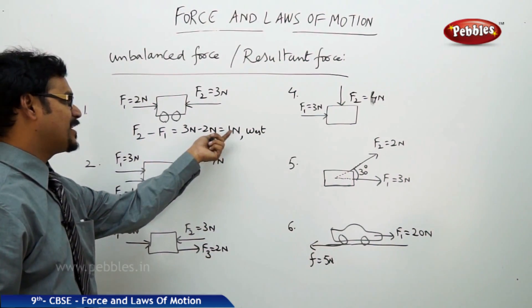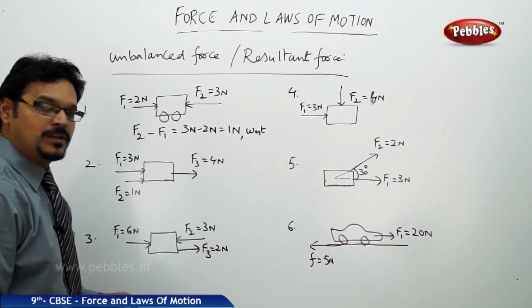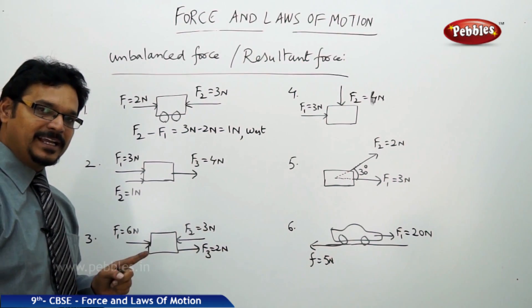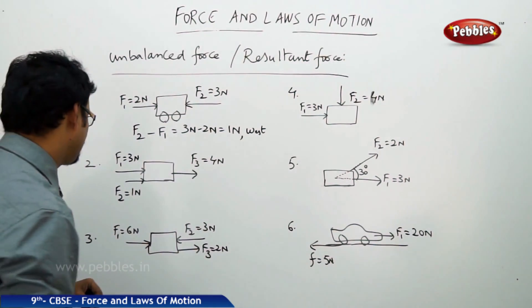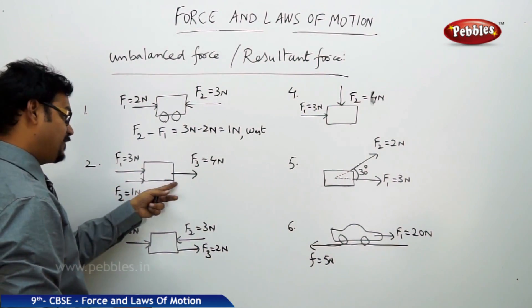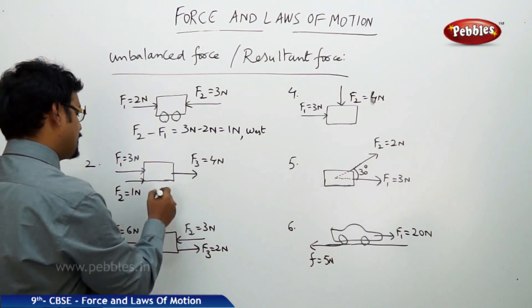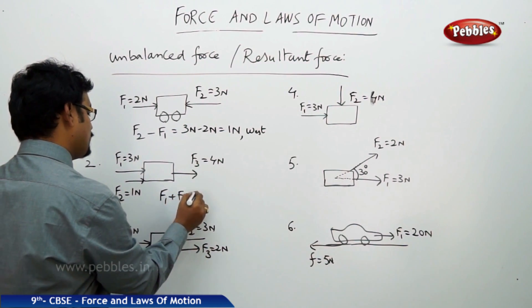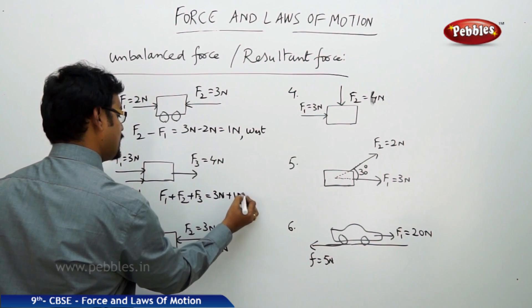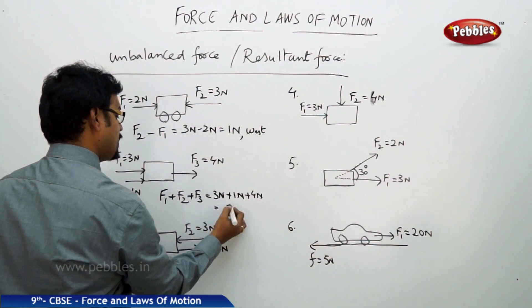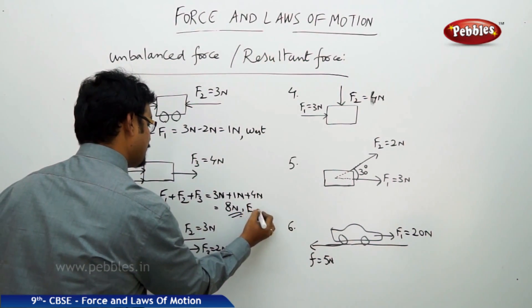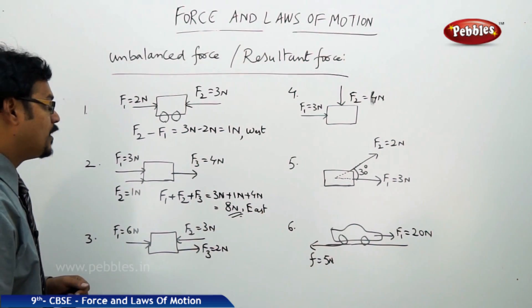That is how you find the resultant force and unbalanced force. Now see the second example. If you want to solve this numerical, pause the video, solve all the numericals and play it again and match with my answers. The two forces acting in the same direction, F1, F2, F3 are all in the same direction. So resultant force is F1 plus F2 plus F3, because all three are in the same direction. 3 newtons plus 1 newton plus 4 newtons. The answer is 8 newtons towards east.